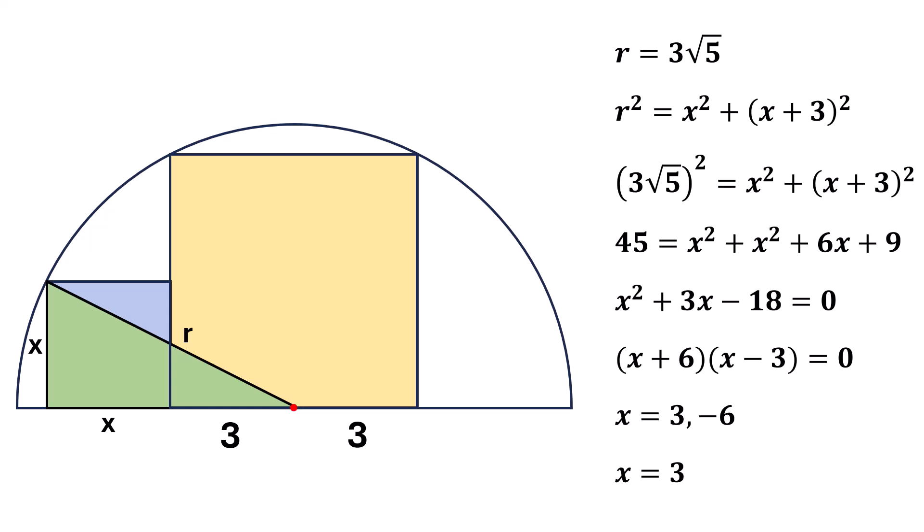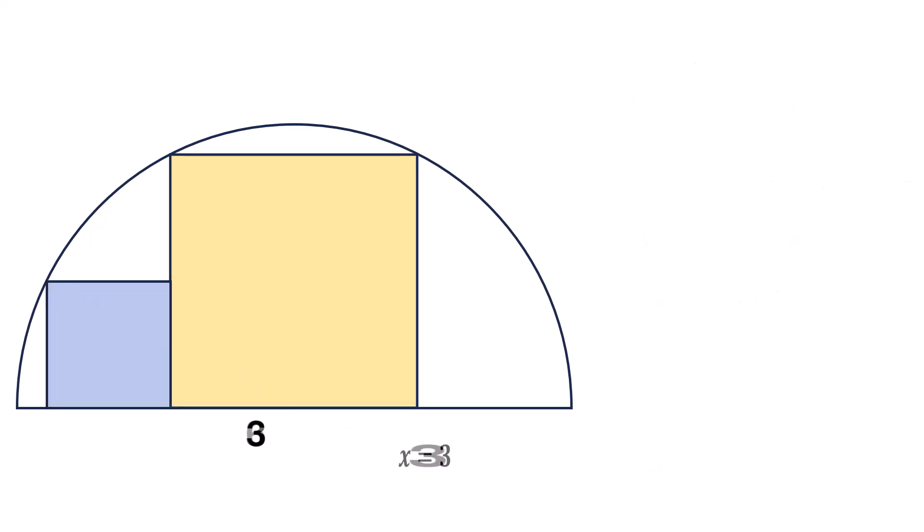So, the lengths of these two squares will be 3 and 6 units. Therefore, the areas of the squares will be 9 and 36 square units.